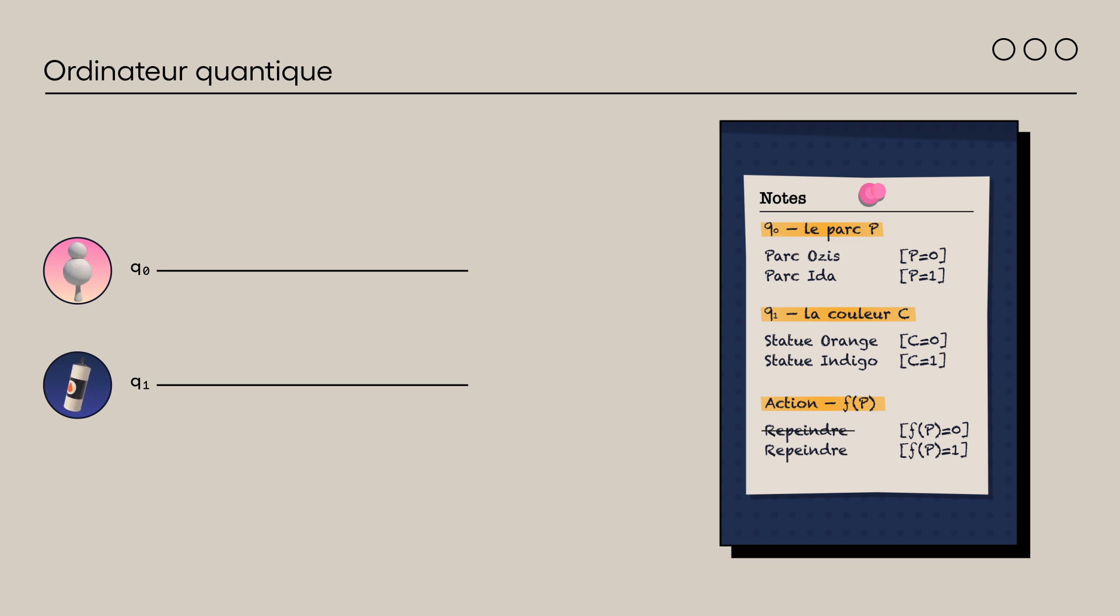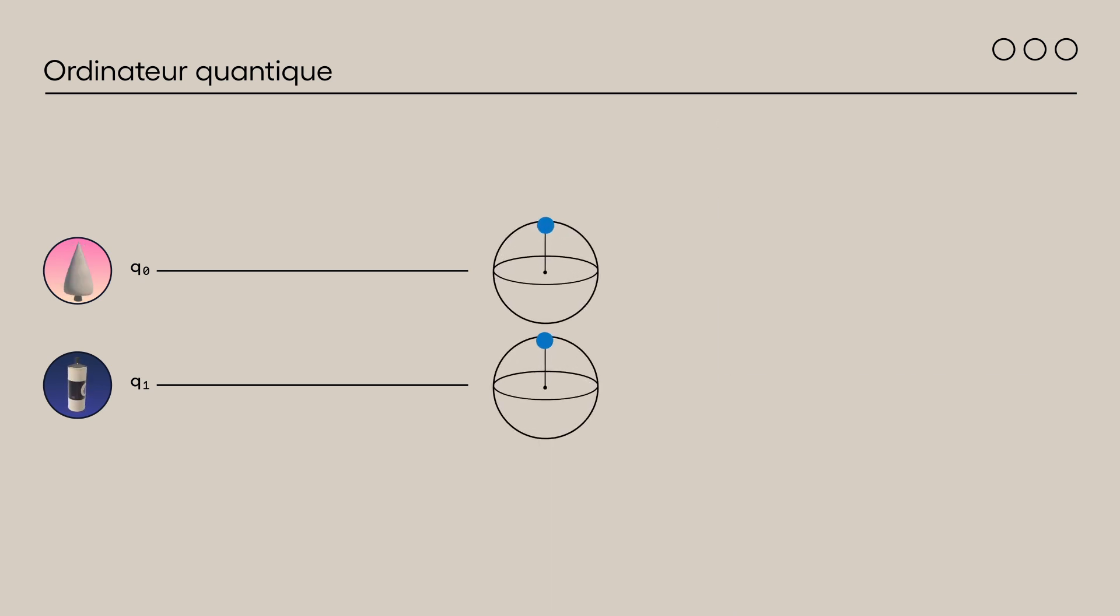D'abord, vous installez la statue au parc Osis, puis appliquez une porte Hadamard sur sa position pour qu'elle se trouve aux deux parcs en même temps. Ensuite, vous placez l'état quantique de la couleur de la statue en superposition d'orange et indigo, suivant l'état moins, en appliquant les portes NOT et Hadamard sur Q1.